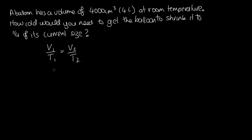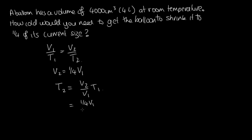We know that V2 is equal to a quarter of V1, where V1 is the original volume, and what we're asked to find is T2. So let's rearrange this: T2 is equal to V2 on V1 times T1. Now we can substitute everything in. V2 is a quarter of V1, and T1 is room temperature, which is 25 degrees Celsius — but this temperature needs to be in Kelvins.